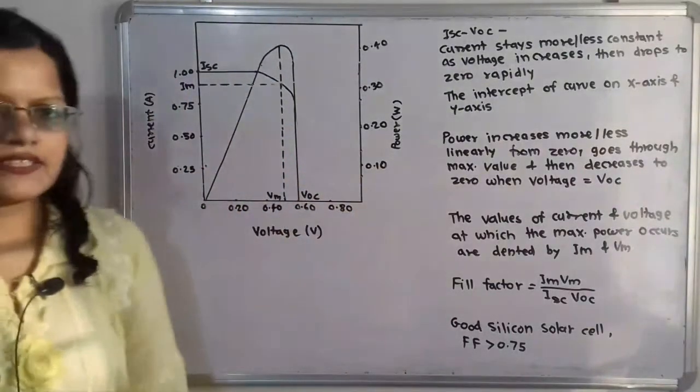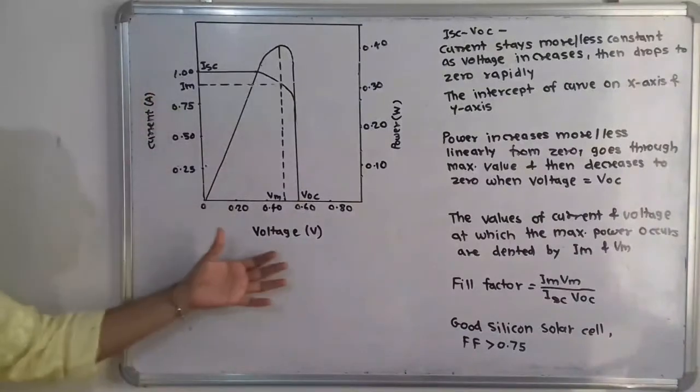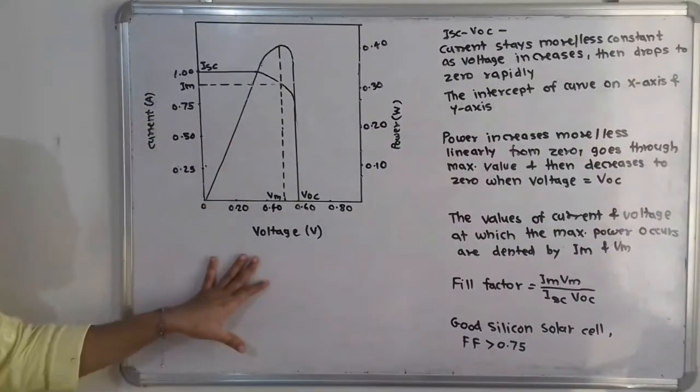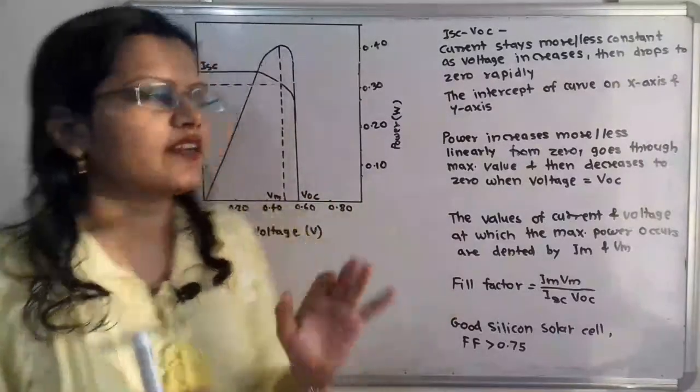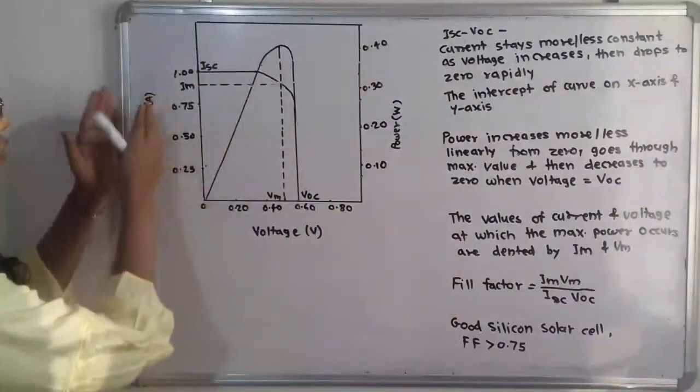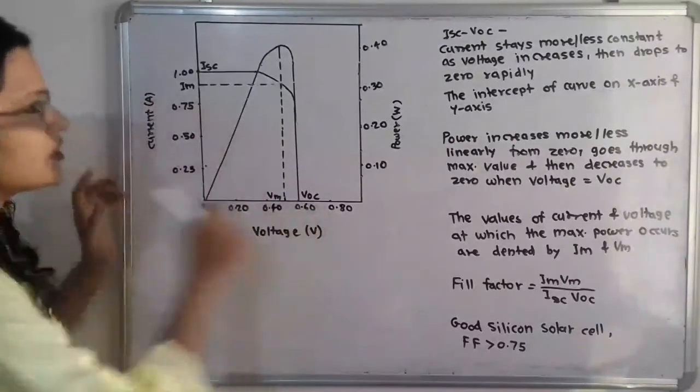That is, the current and voltage are getting plotted. Now if we observe what is the characteristics for this current and voltage, that means how this current is getting changed with respect to this voltage.